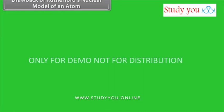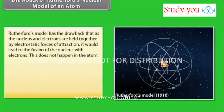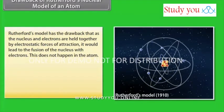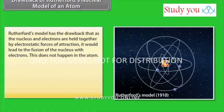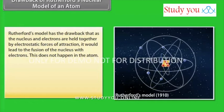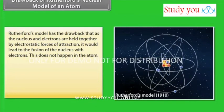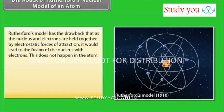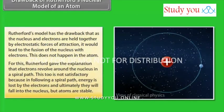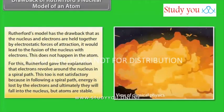Drawback of Rutherford's Nuclear Model of an Atom. Rutherford's model has the drawback that as the nucleus and electrons are held together by electrostatic forces of attraction, it would lead to the fusion of the nucleus with electrons. This does not happen in the atom. For this, Rutherford gave the explanation that electrons revolve around the nucleus in a spiral path. This too is not satisfactory because in following a spiral path, energy is lost by the electrons and ultimately they will fall into the nucleus but atoms are stable.